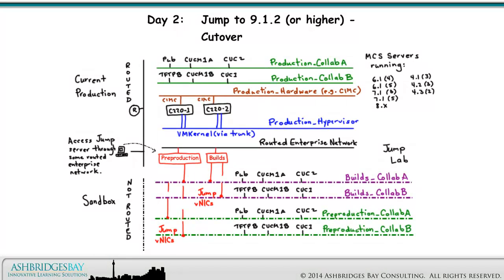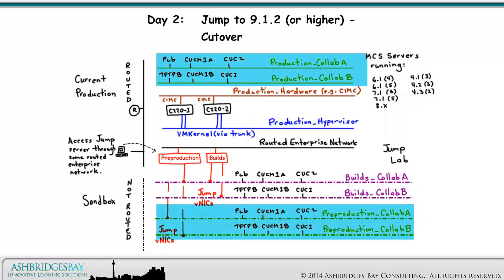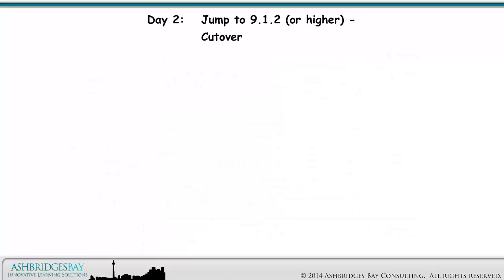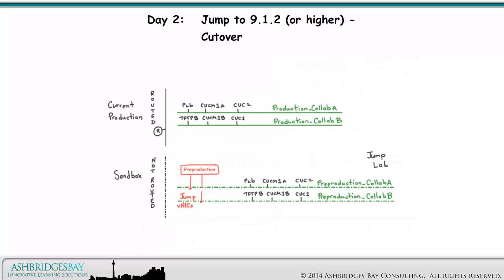This is an overview of the Jump Lab. This drawing looks at activities on the production and pre-production clusters. In this drawing, we look at Cutover. First, we'll inventory registered devices. We can do that outside of the maintenance window.